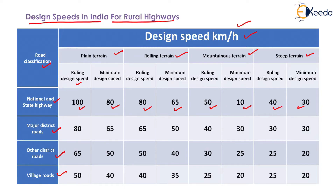The design speed should preferably be uniform along a given highway. But variations in terrain may make changes in speed unavoidable. Where this is so, it is desirable that design speed should not be changed abruptly but in a gradual manner — by introducing successive sections of increasing or decreasing design speed so that the road user gets conditioned to the change by degrees.